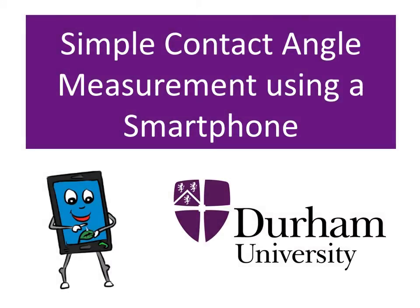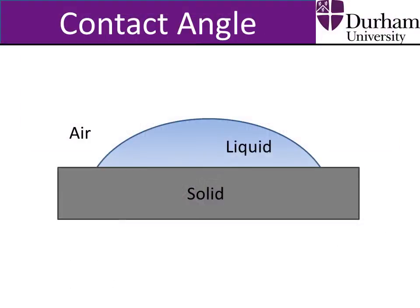This tutorial is going to show you how to use your smartphone to measure the wettability of surfaces. As explained in earlier tutorials, the contact angle of a liquid droplet on a surface is a good method of characterising the wetting properties of that surface.